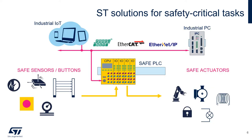Today's factories are complex environments with a layered structure based on sensors and actuators installed across the factory floor. When talking about functional safety, sensors are usually represented by devices like fire and gas alarms, safety end position switches, light curtains, and emergency stop buttons.